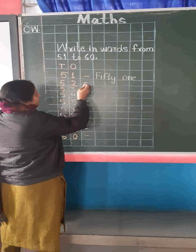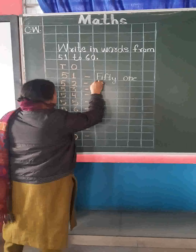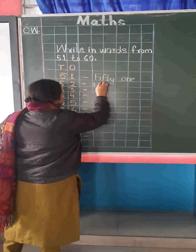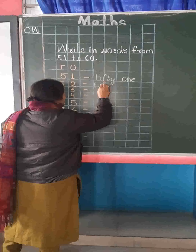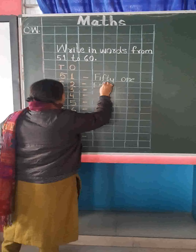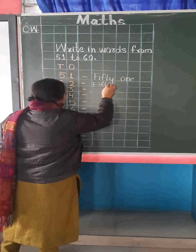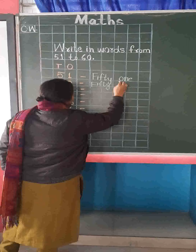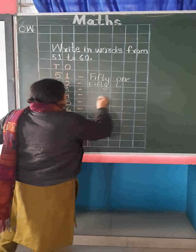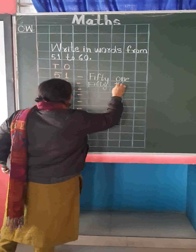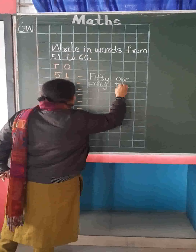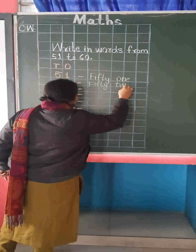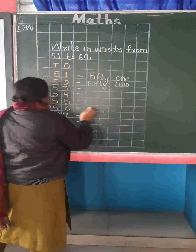Similarly we will write here the spelling of 50: F, I, F, T, Y. 50. And we will write the spelling of 2: T, W, O. 52.